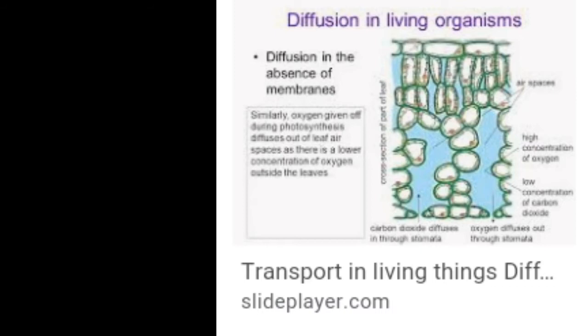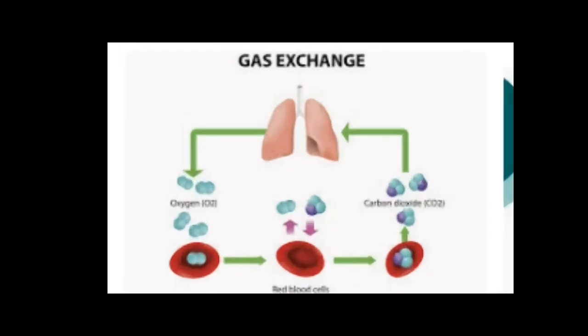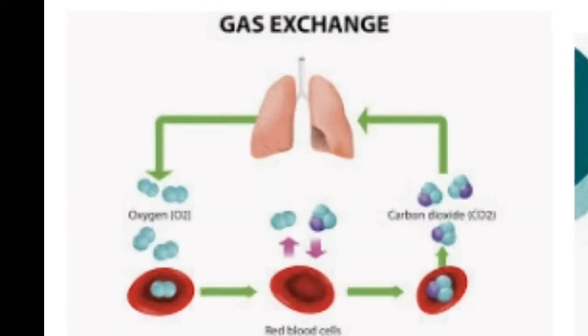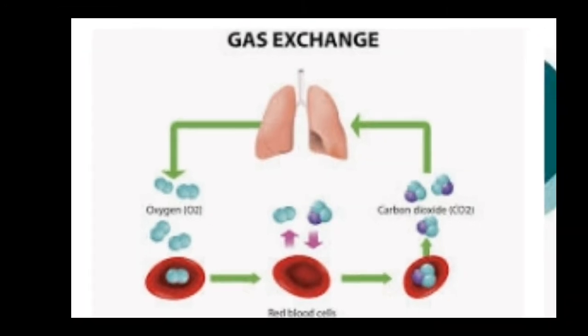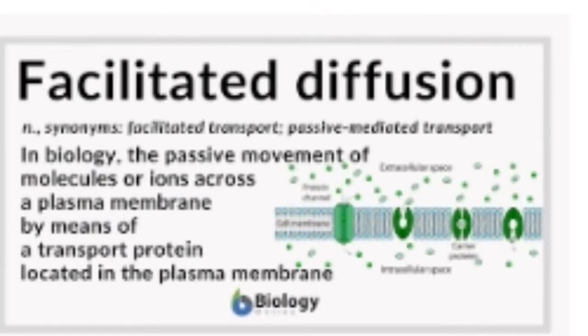Diffusion plays a role in the uptake of substances within our organism or between the organism and the environment. In microscopic single-celled organisms, diffusion is the only means to exchange gases during respiration and for the removal of substances, which is called excretion. By the diffusion process, amoeba performs all its life functions.